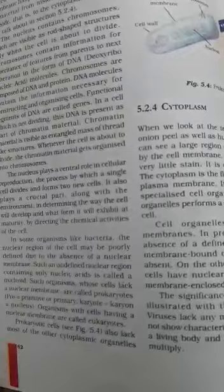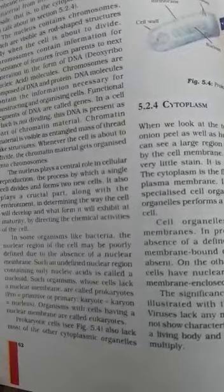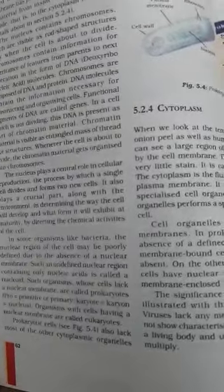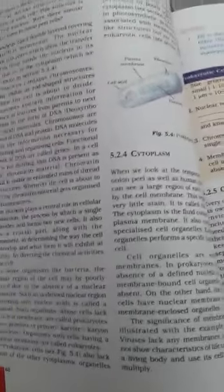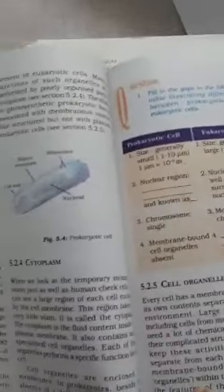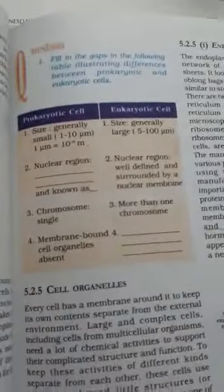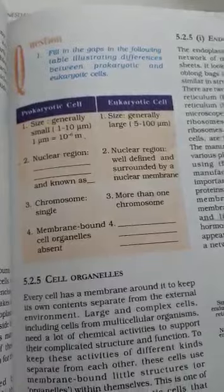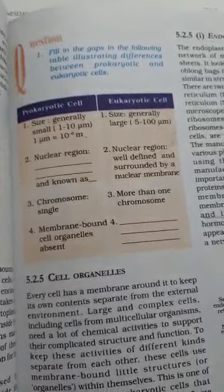Prokaryotes also lack cell organelles, whereas organelles are present in eukaryotic cells. We can discuss this with the help of the differences given there.